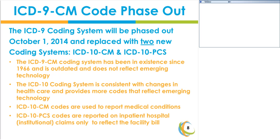On October 1st, 2014, the ICD-9 coding system will be phased out and replaced with two new code sets: the ICD-10-CM and the ICD-10-PCS. As a result of changes in existing technology, it was determined that the ICD-9 coding system is outdated, as it has been in existence since 1966, and there has been no room for additional codes to be included.